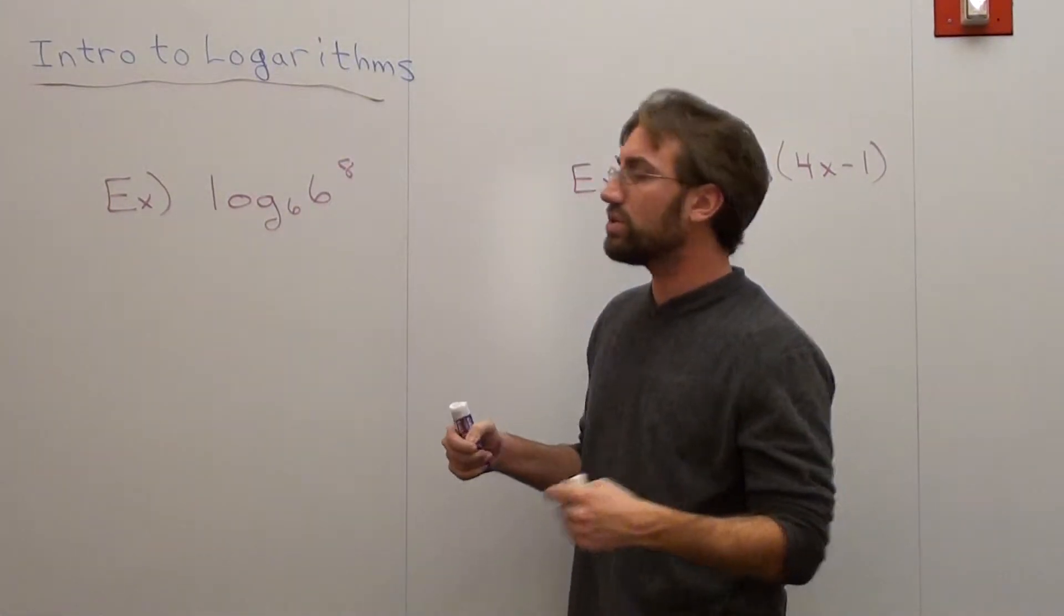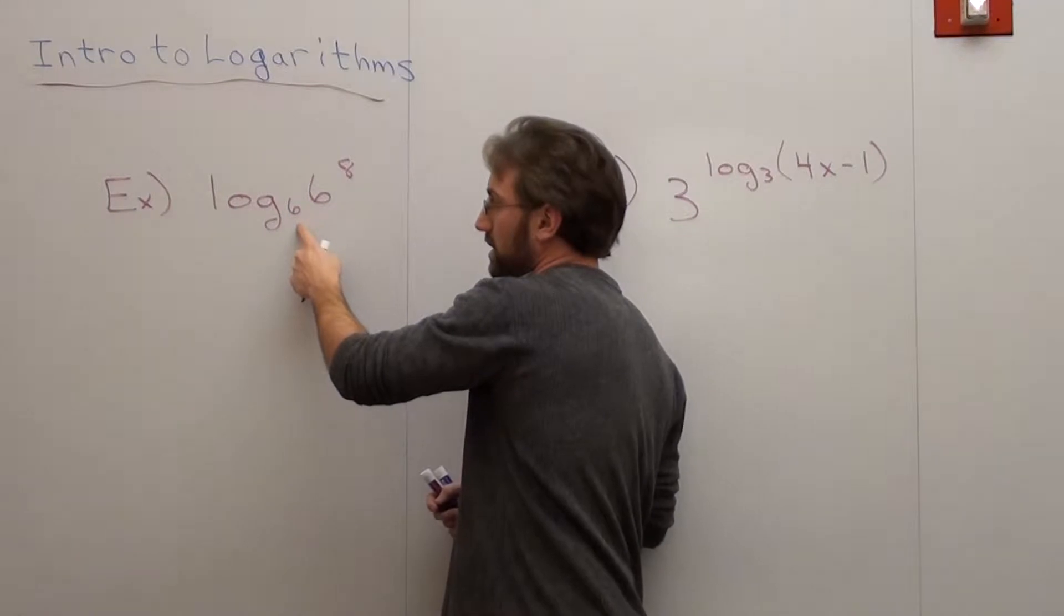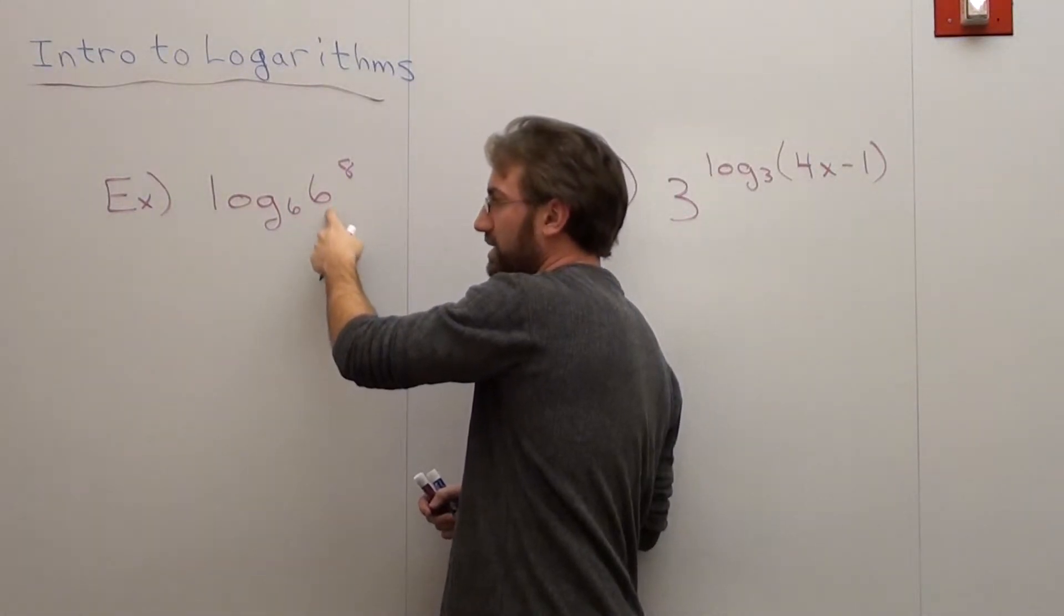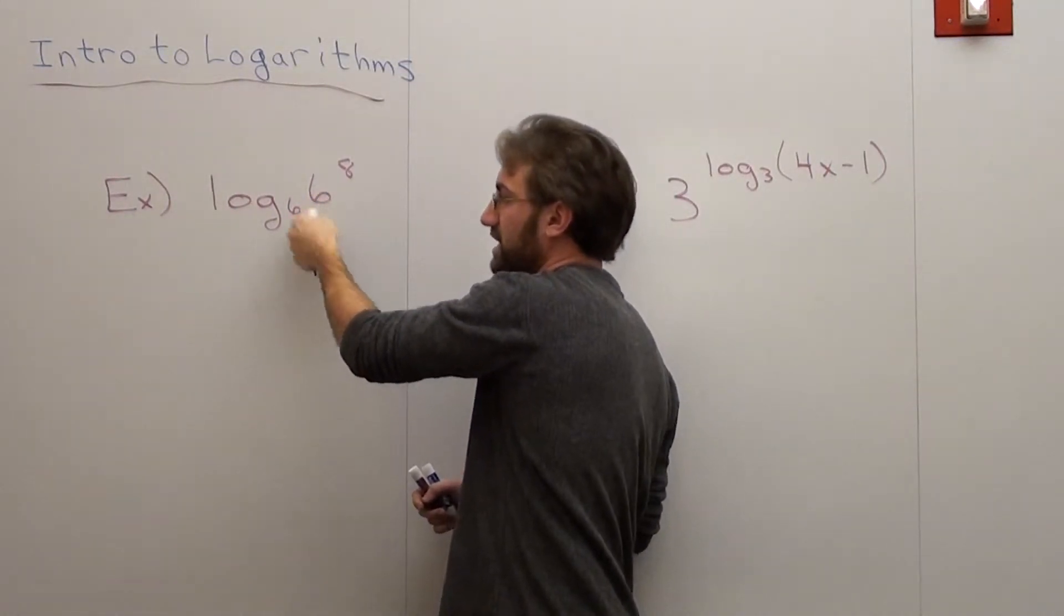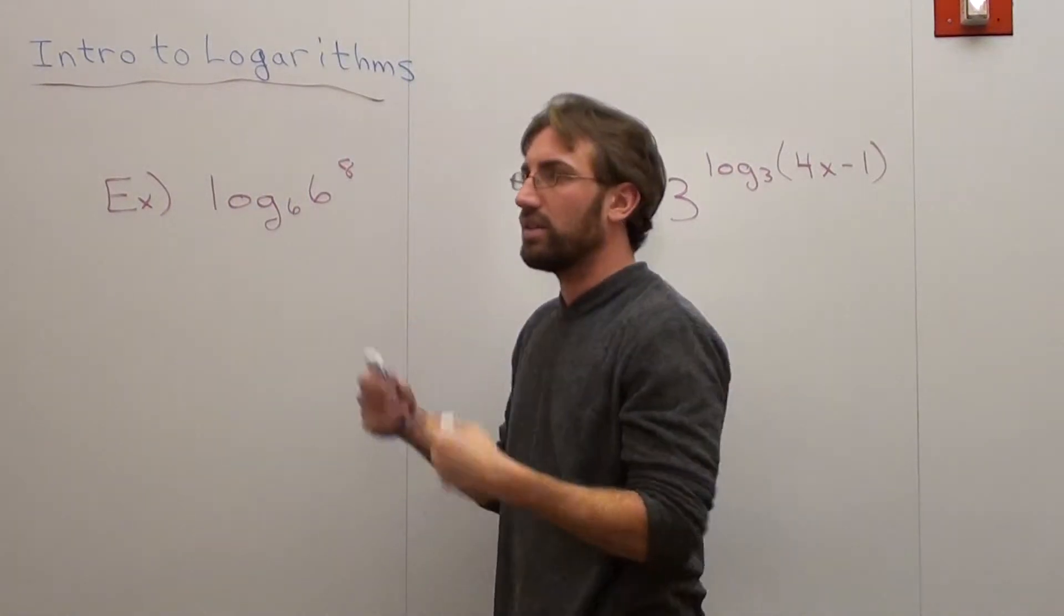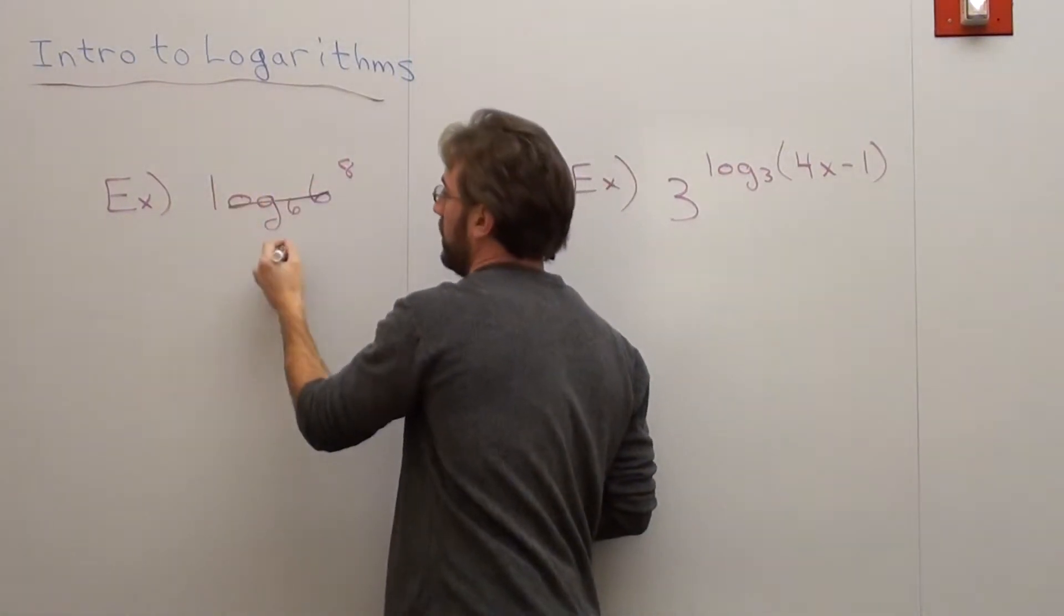If you see a log of a base, and the base of that problem is the same as the log of the base, they cancel out and you're left with 8.